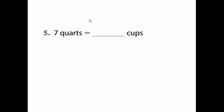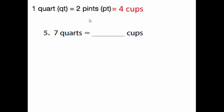We have: 7 quarts equals how many cups? Let's remember — one quart equals 2 pints, and each pint equals 2 cups, so one quart equals 4 cups. So for 7 quarts, we cancel the word quarts and put the value 4 cups. 7 times 4 finally gives us 28 cups.